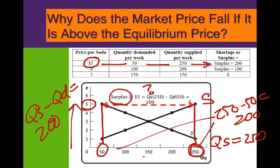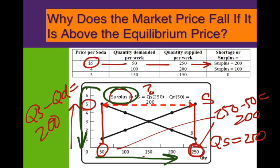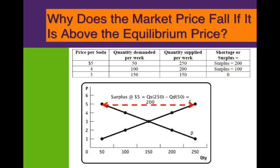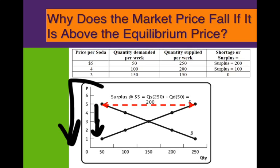We have 200 more units out there than are being sold. So the suppliers are going to have to lower the price to entice the demanders to increase their demand for the good. This is how you clear the market. Think about Christmas wrapping paper on December 26th — stores like Michaels or CVS will literally lower the price to get rid of inventory and eliminate the surplus.